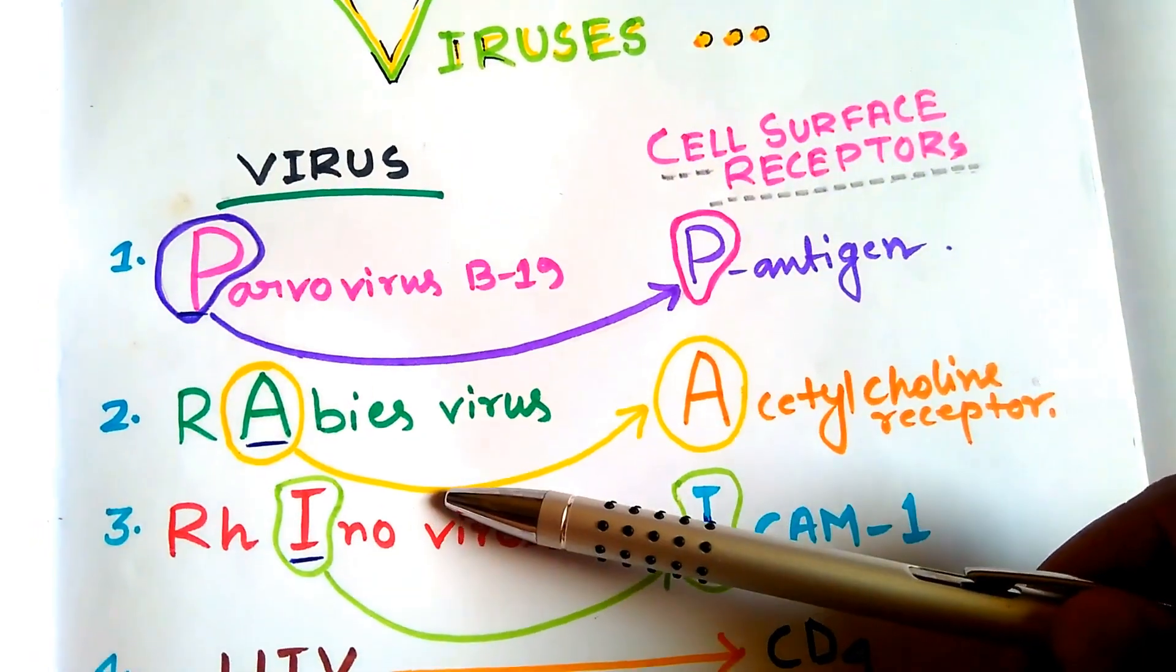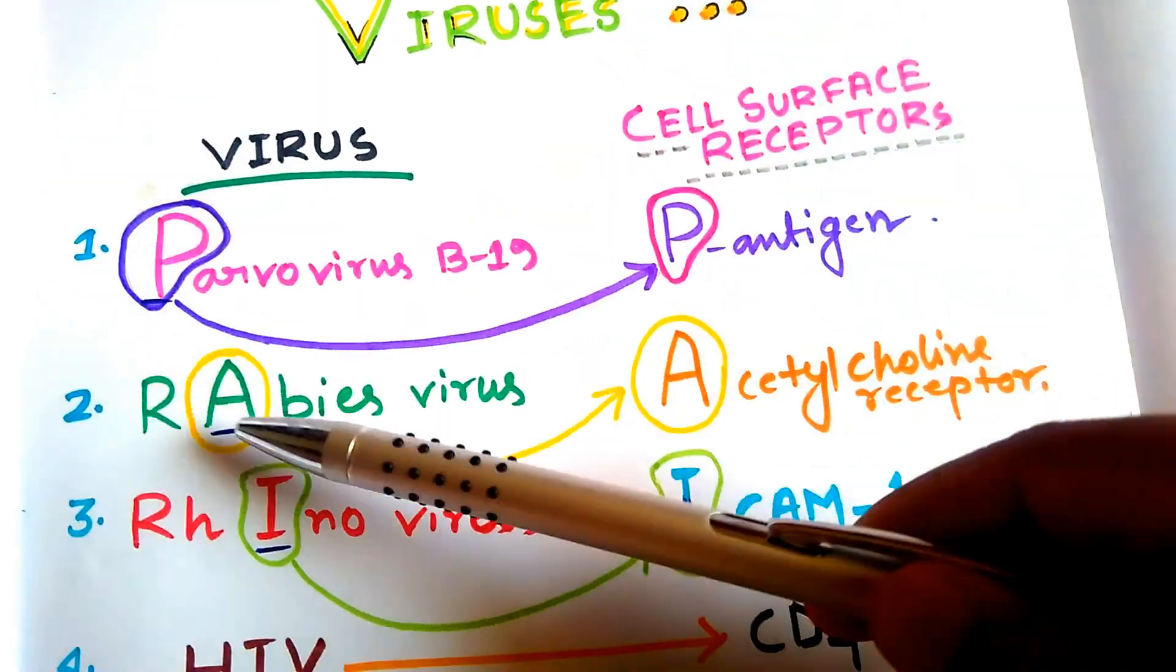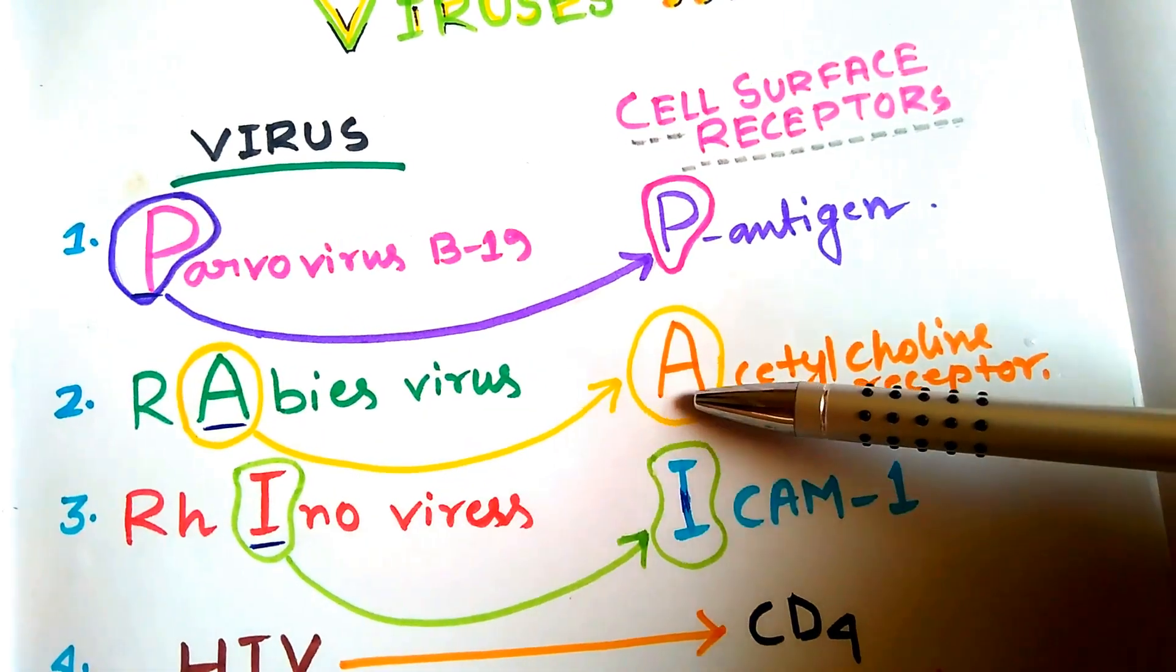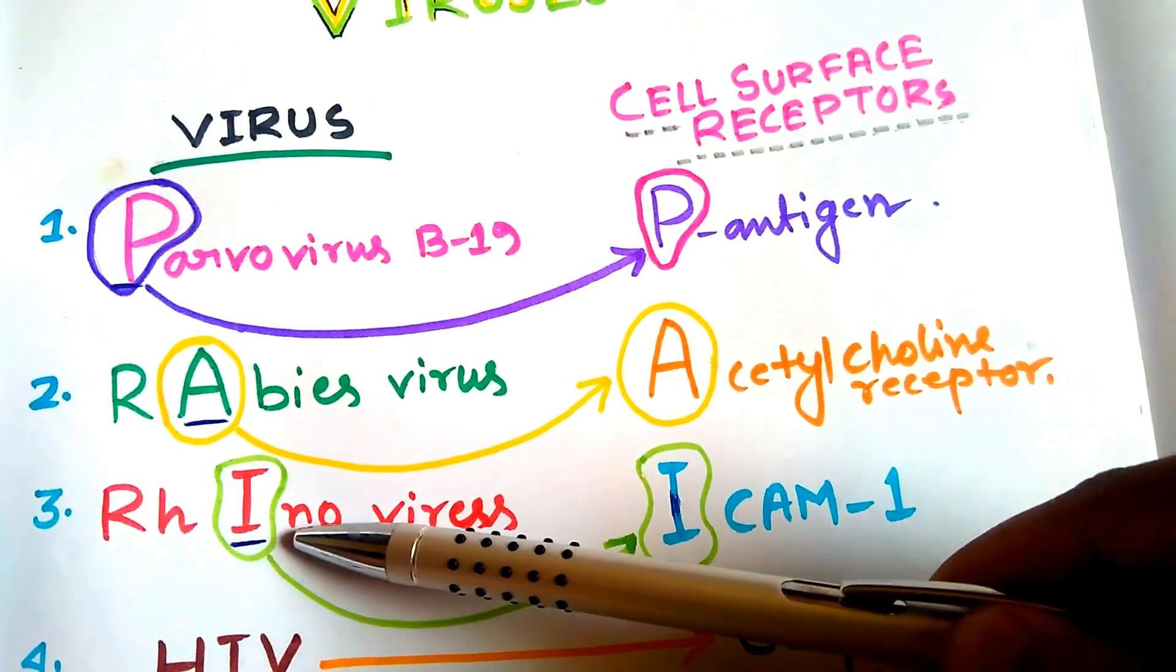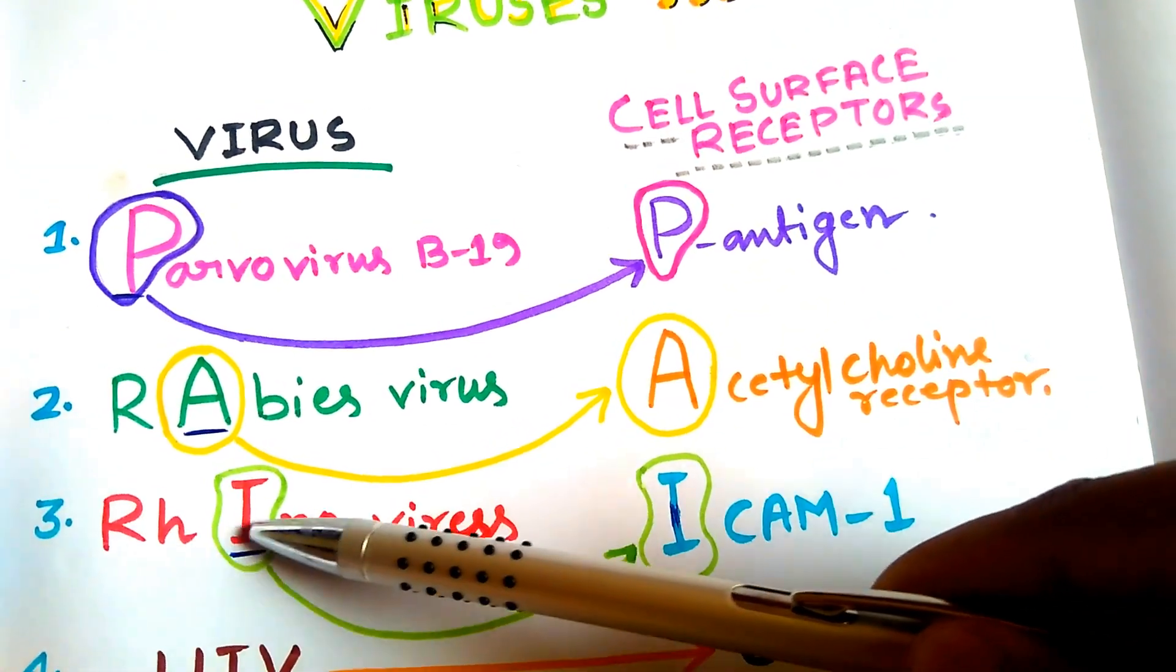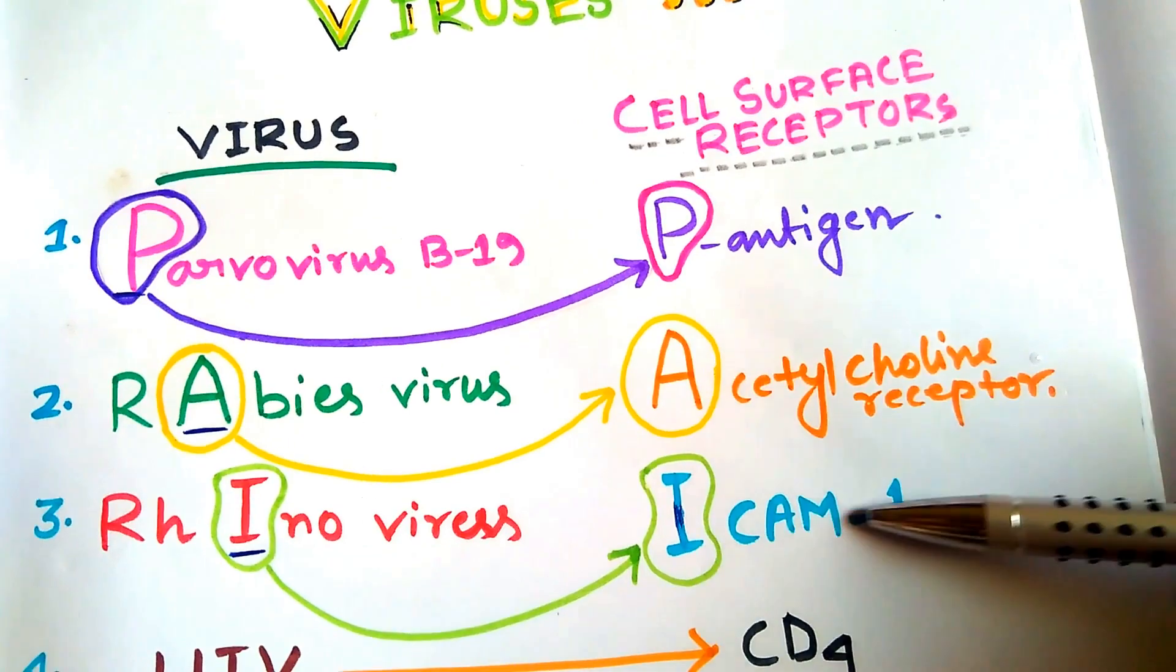If we go with the pronunciation, friends, Rabies virus—there is an A, so A for Acetylcholine receptor. Now Rhinovirus—there is an I in the pronunciation, so I for ICAM-1.